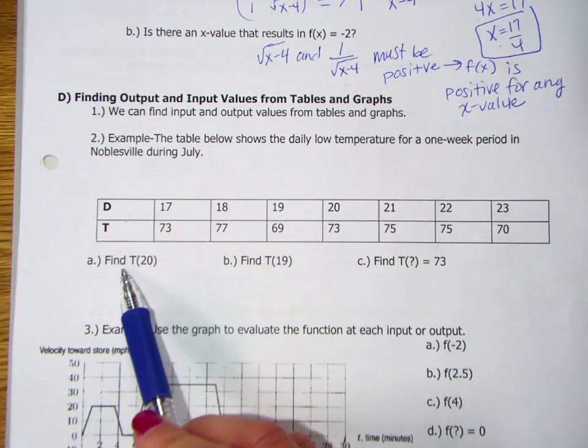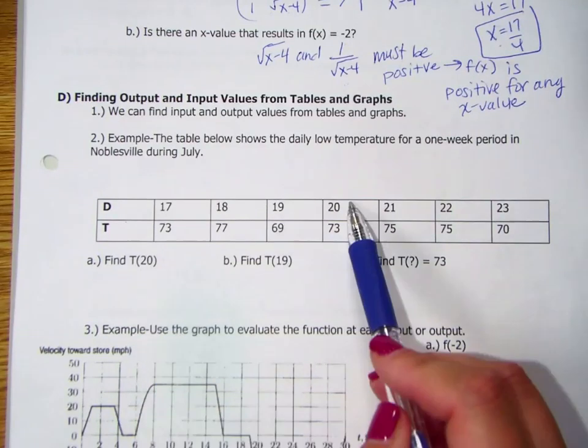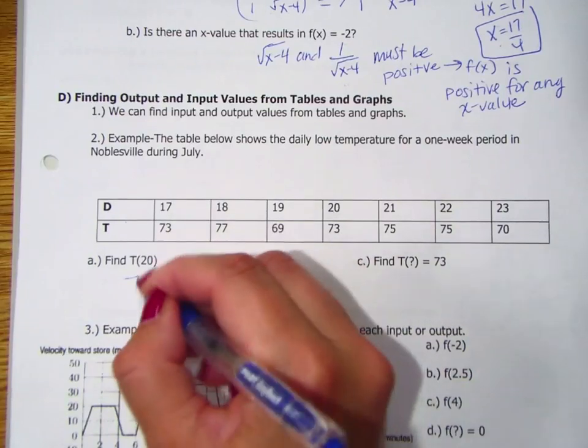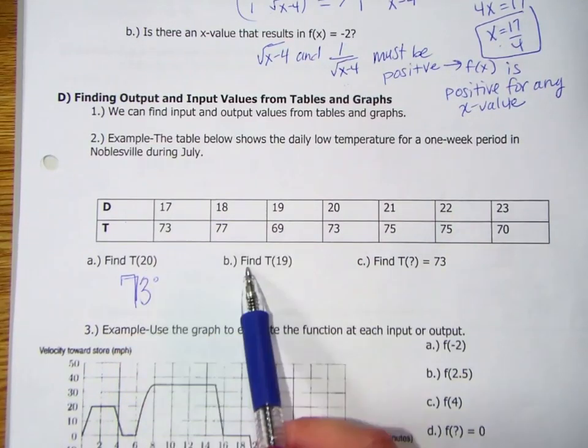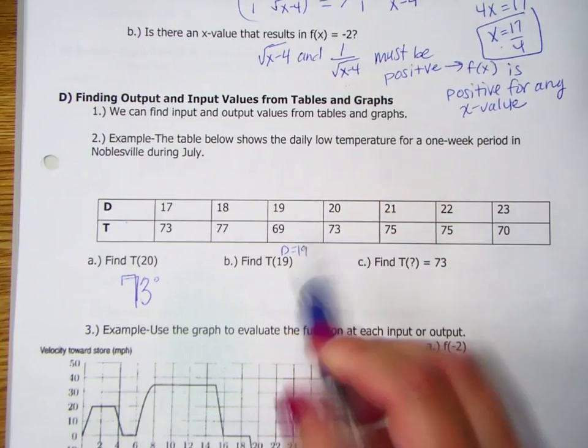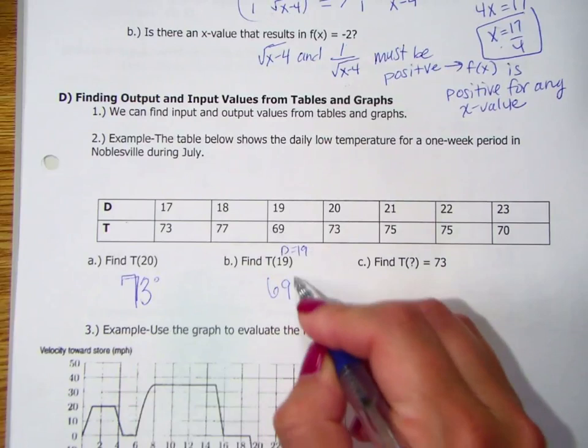So if it says find T(20), that means we're finding the temperature when D is 20. So that would be 73 degrees. We're finding T(19). So that means when D is 19, what's T? Well, that would be 69 degrees.